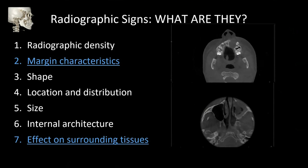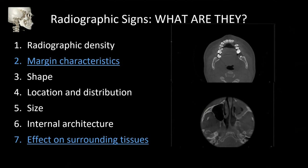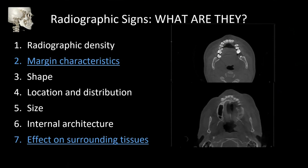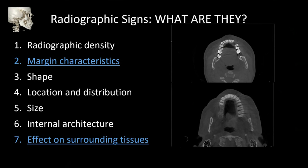We're going off of seven radiographic signs: radiographic density, marginal characteristics, shape of the lesion, location and distribution, size, internal architecture, and effects on surrounding tissues. Two of these are highlighted as most important for determining how aggressive an entity is: marginal characteristics and effects on surrounding tissues. We really want to pay attention to what a lesion is doing to surrounding tissues.